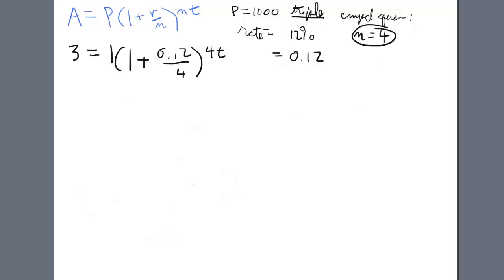Okay, simplify. This is 3 equals 1.03. That's 0.12 over 4 is 0.03. 1 plus 0.03, 1.03 to the 4t. This is where it looks a little nasty, because you're like, what's up with that exponent?